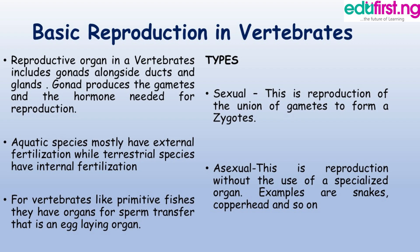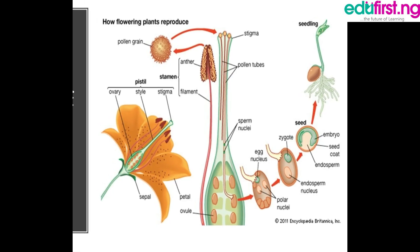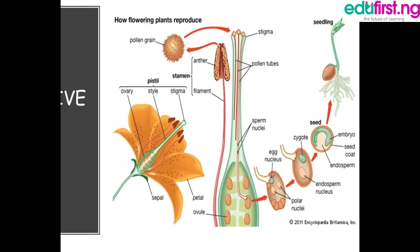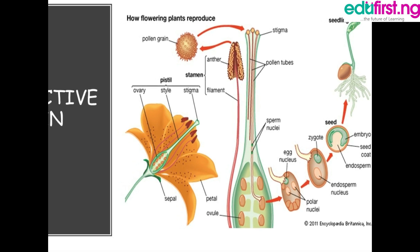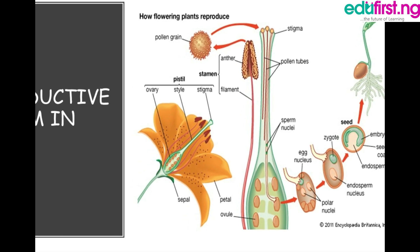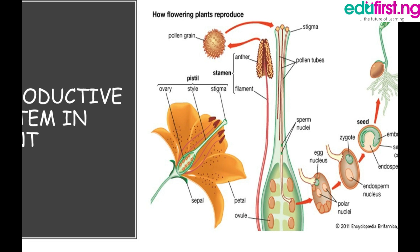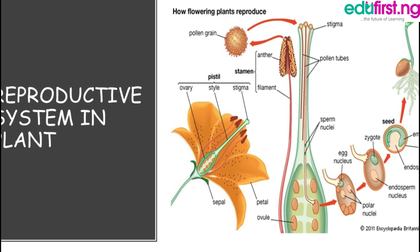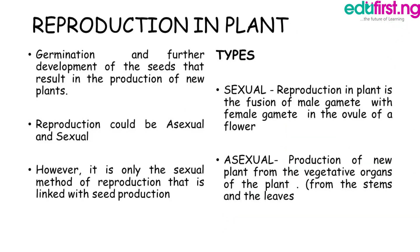Now we're going to look at reproductive systems in plants. This has to do with germination and further development of seeds that results in the production of new plants. In plants as well, we have sexual and asexual reproduction. Sexual is the fusion of male gamete with female gamete in the ovule of a flower, while asexual is the production of a new plant from the vegetative organs of the plant — from the stems and the leaves. However, it is only the sexual method of reproduction that is linked with seed production.